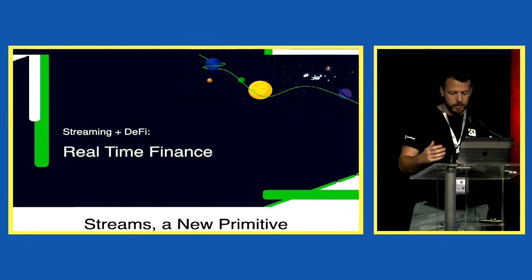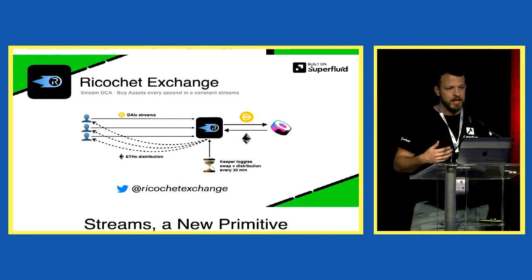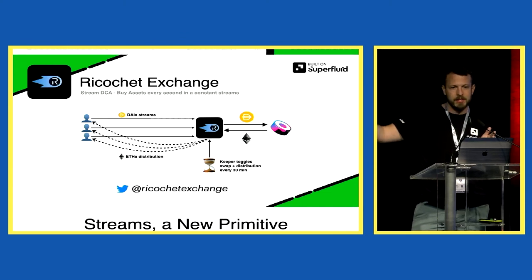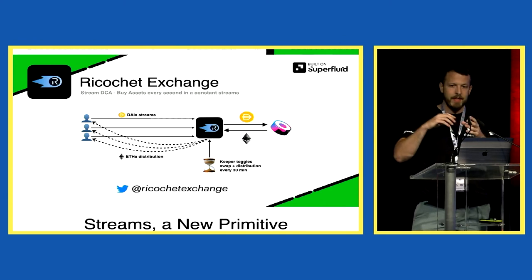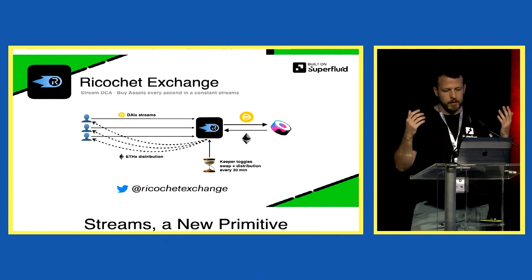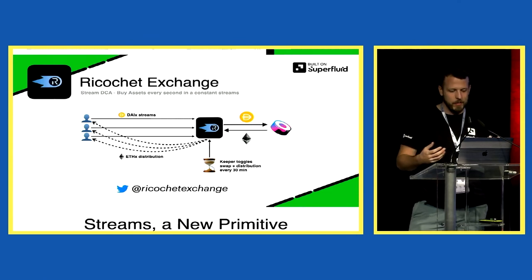Ricochet is an exchange. Their first product is a DCA — you can buy Ether every second. Imagine you're receiving your salary every second and you decide to allocate $1,000 of that to buy Ether. It's completely automated: the employer does one transaction to pay you, you do one transaction to the DCA exchange, and it buys Ether for you forever with no other interactions. They have a small intermediary contract that every 30 minutes swaps money on SushiSwap and redistributes income to the people streaming. It's already working, and they realized if they removed SushiSwap it became a streaming ICO — so they're doing that as well.